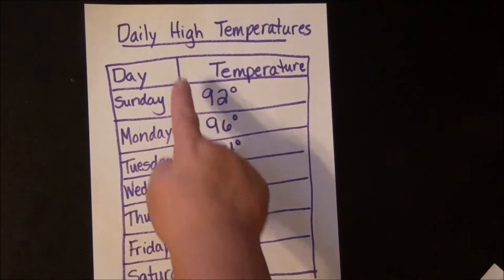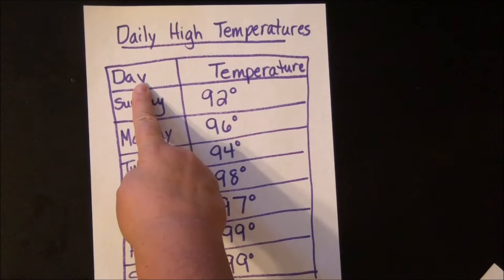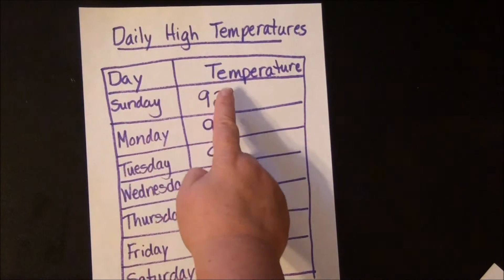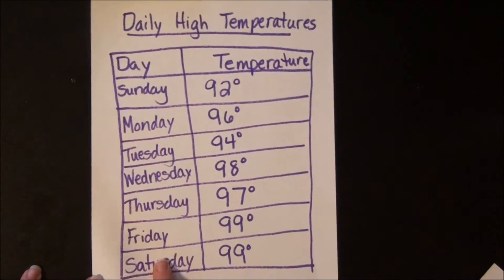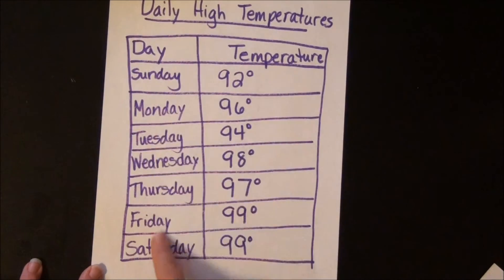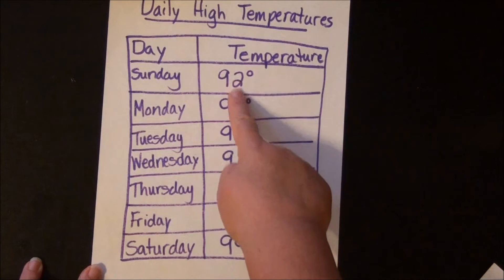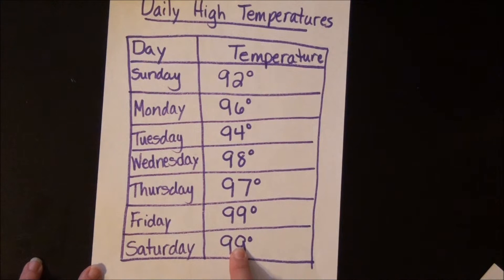You can see that there is a title that shows the day label and the temperature label, and then underneath the day column you have all of the days of one week. Those are also labels. Then you have your actual data, those are the numbers.